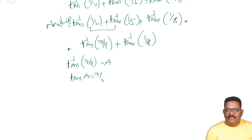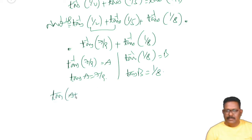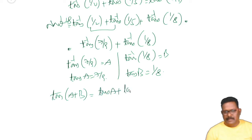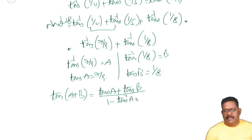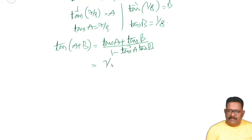Let tan inverse 1 by 8 equal to c, so tan c equals 1 by 8. Tan(a+c) equals tan a plus tan c divided by 1 minus tan a times tan c, which is 7 by 9 plus 1 by 8 divided by 1 minus 7 by 9 into 1 by 8.